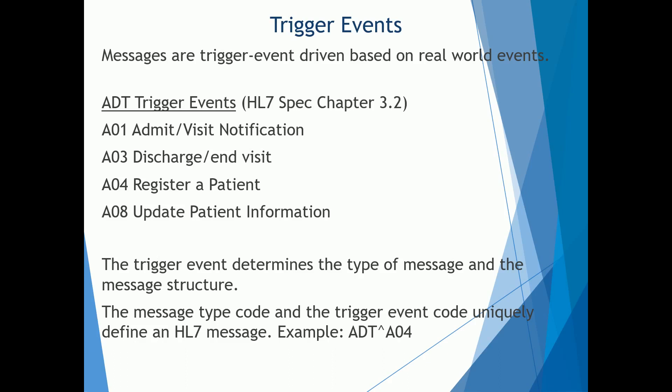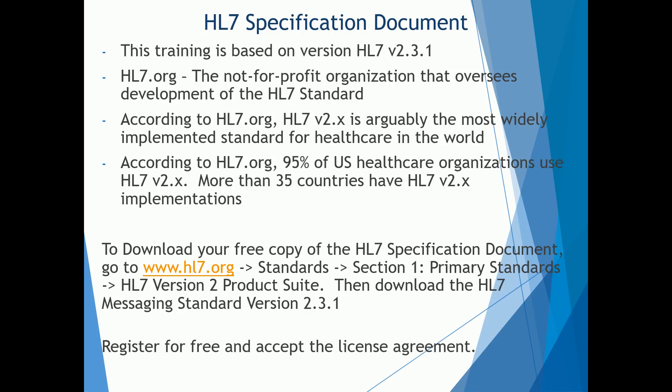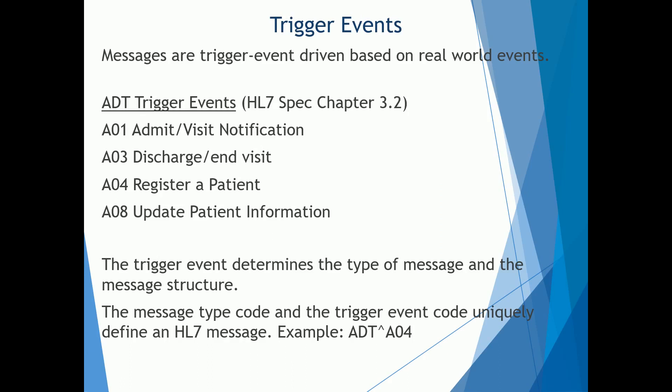I'm going to cut this video here. This is going to be the end of part one, where we went over trigger events. We went over in general what HL7 is, what an actual HL7 message looks like, the HL7 specification document, a little bit about HL7.org and where you can get your copy of the HL7 spec document — as well as the more common message types, a brief introduction into the workflow for an HL7 message, and what trigger events are.